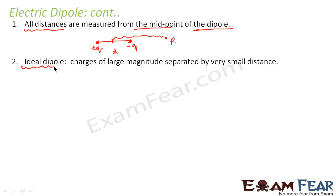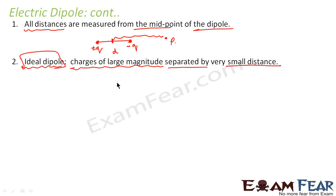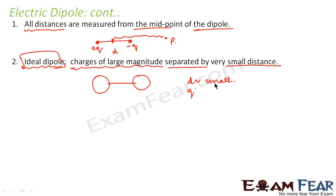There is something called an ideal dipole. A dipole is said to be an ideal one if the charges are of large magnitude separated by a very small distance. When the distance is very small and comparatively the magnitude of the charges is very large, that kind of dipole is known as an ideal dipole.